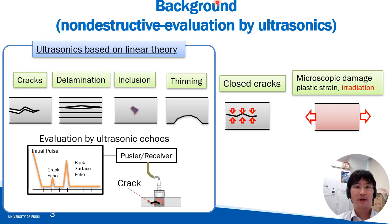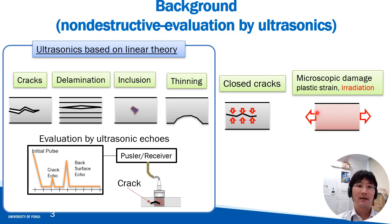On the other hand, there are some types of damage that cannot be detected by these methods. An example is a closed crack. The reflected wave may not be clearly obtained from a crack whose crack surface is closed due to pressure. Material changes on a scale smaller than the ultrasonic wavelengths are also difficult to detect. Material embrittlement due to radiation is also a change on such a very small scale. Therefore, attention is being paid to methods that focus on parameters not evaluated by conventional ultrasonic evaluation methods.